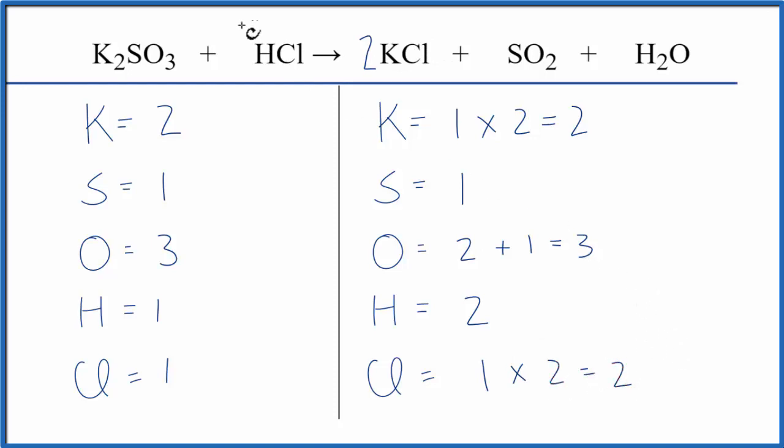But that's okay, because if we put a coefficient of two in front of the HCl, we have the one chlorine times the two. That fixes the chlorines, and for the hydrogens, we have one hydrogen times two. That gives us two hydrogens.